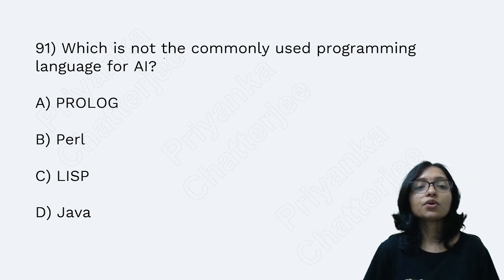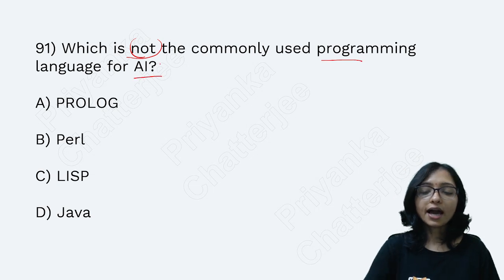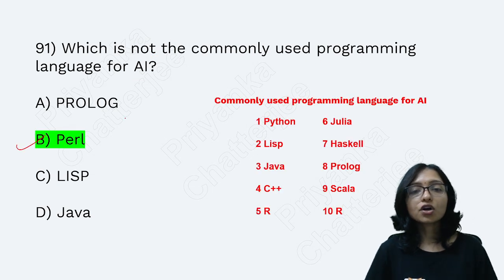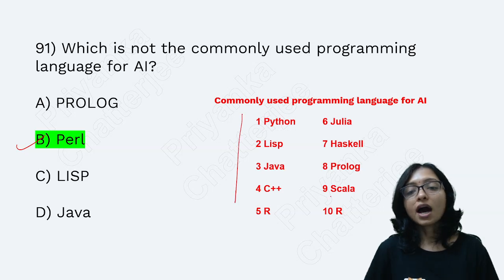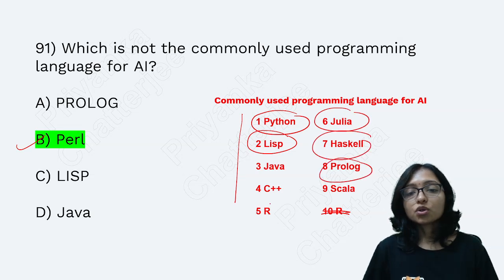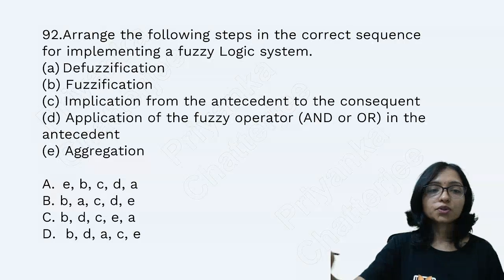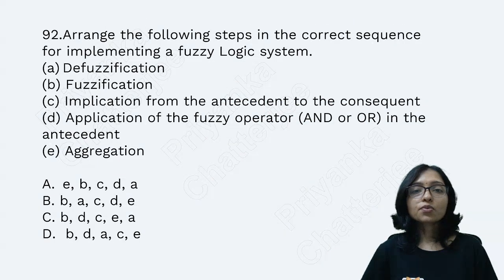Here you can see: which one is not a commonly used programming language in AI? The answer is Pearl (Perl), because the commonly used programming languages in AI are the others listed. These names are very important — make a note in your notebook.